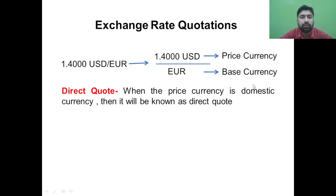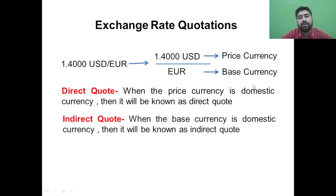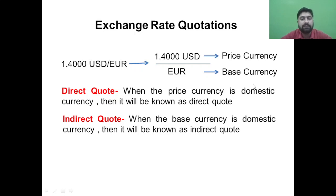The direct quote can be understood as when the price currency is the domestic currency — that is, the currency in the numerator is your domestic currency. If the base currency (the currency in the denominator) is the domestic currency, then it is called an indirect quote. For example, if you are in India and the Indian rupee is in the numerator, that quotation is a direct quote. If the Indian rupee is in the denominator, it is an indirect quote.